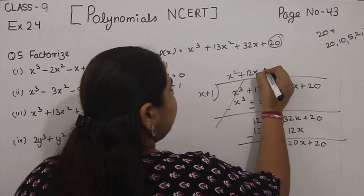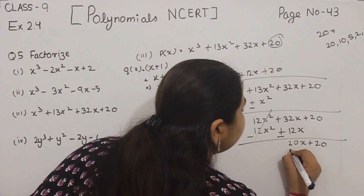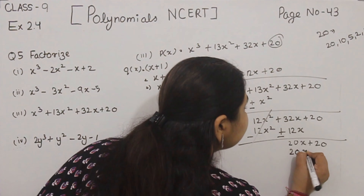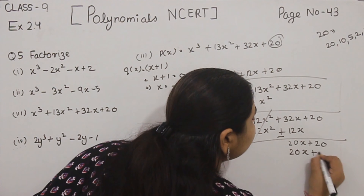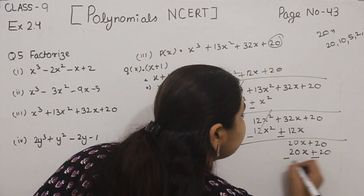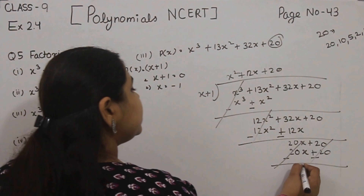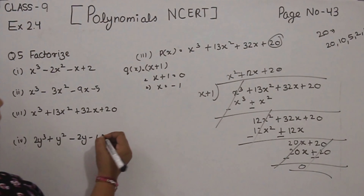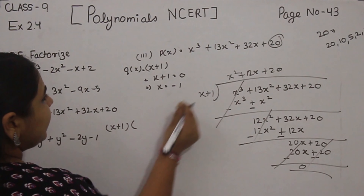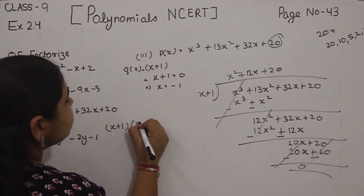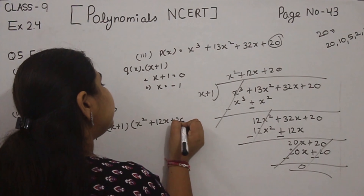Now we write +20. We multiply x by 20 to get 20x, and 1 by 20 to get 20. Sign changed, cancelled. Remainder is 0. So the factors are (x + 1) and the other factor is x² + 12x + 20.